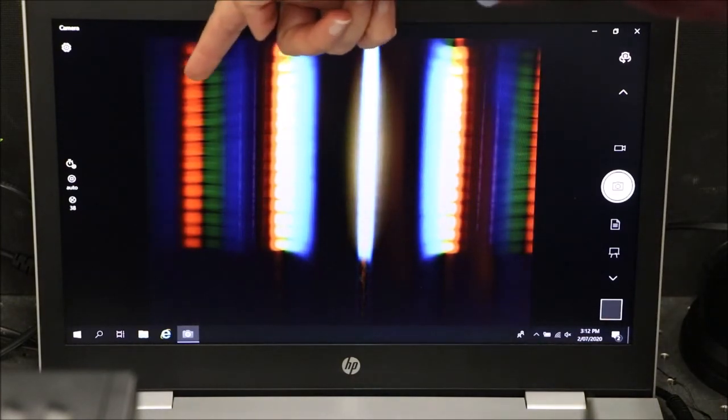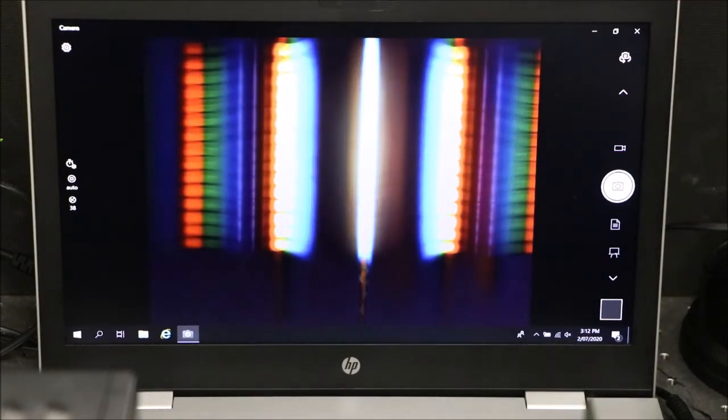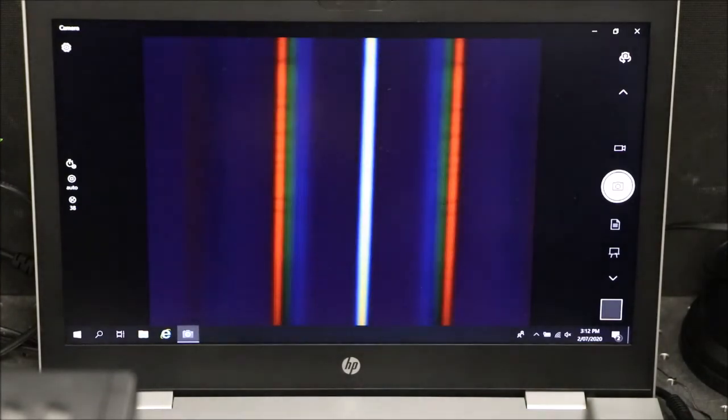You can see that here we have an image of the filament. To get rid of that we will put the diffuser onto the white light source.